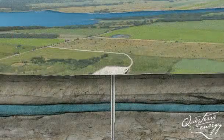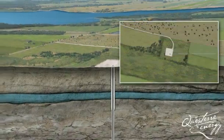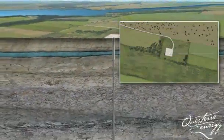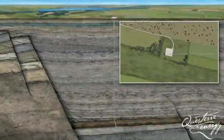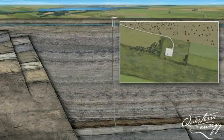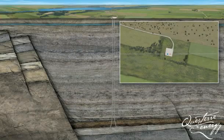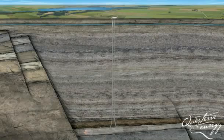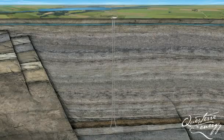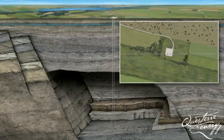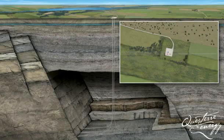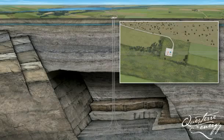The next step is to install a permanent wellhead, also known as a Christmas tree, and other necessary surface equipment. With horizontal drilling, this procedure can be repeated several times from one pad. The pad drains a large area underground by drilling several horizontal wells that branch out in different directions. This dramatically reduces the impacts by decreasing surface disturbance.